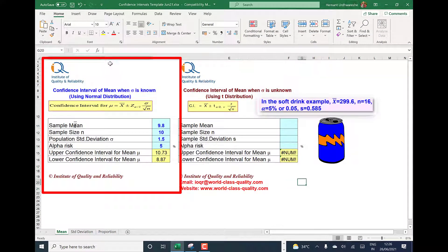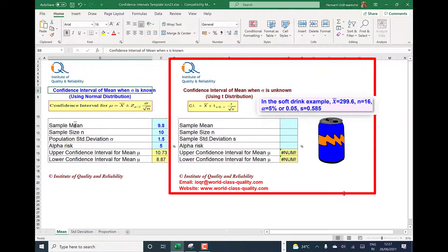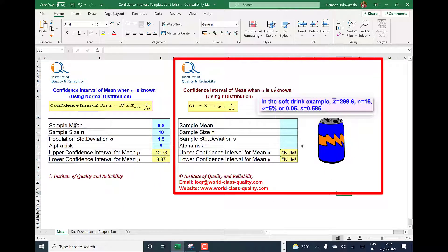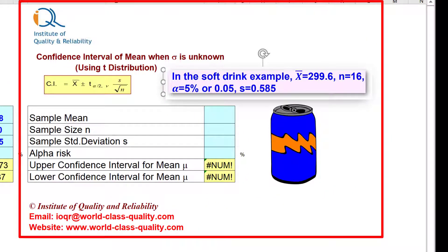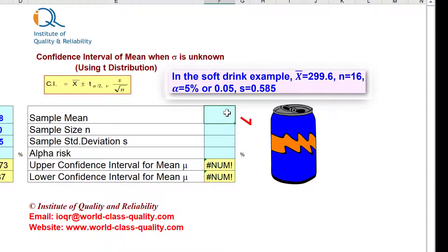The left side of the template can be used when sigma population standard deviation is already known. In this case, we do not know the population standard deviation sigma, so we use the right side of the template using t distribution. In the soft drink example, we enter sample mean as 299.6, sample size n is 16, sample standard deviation is 0.585, and alpha risk is 5%.